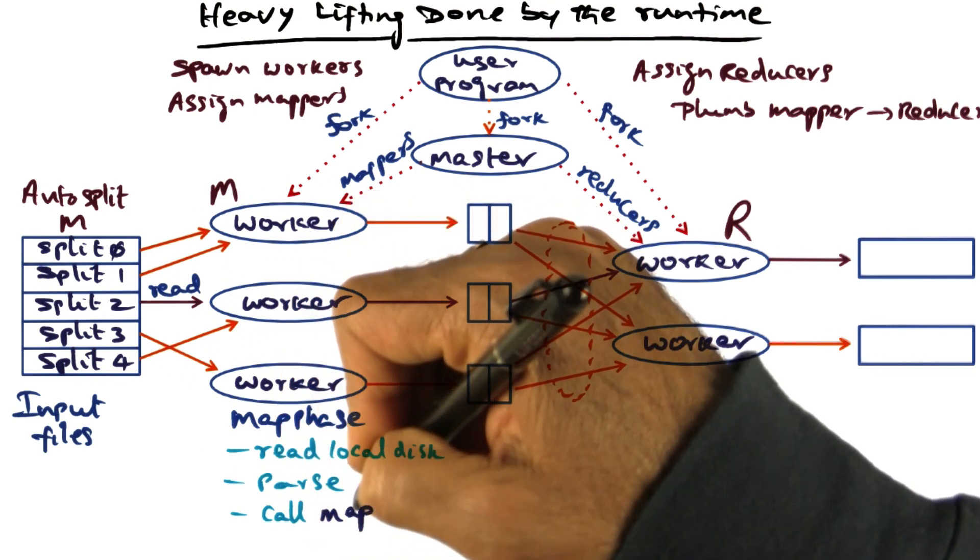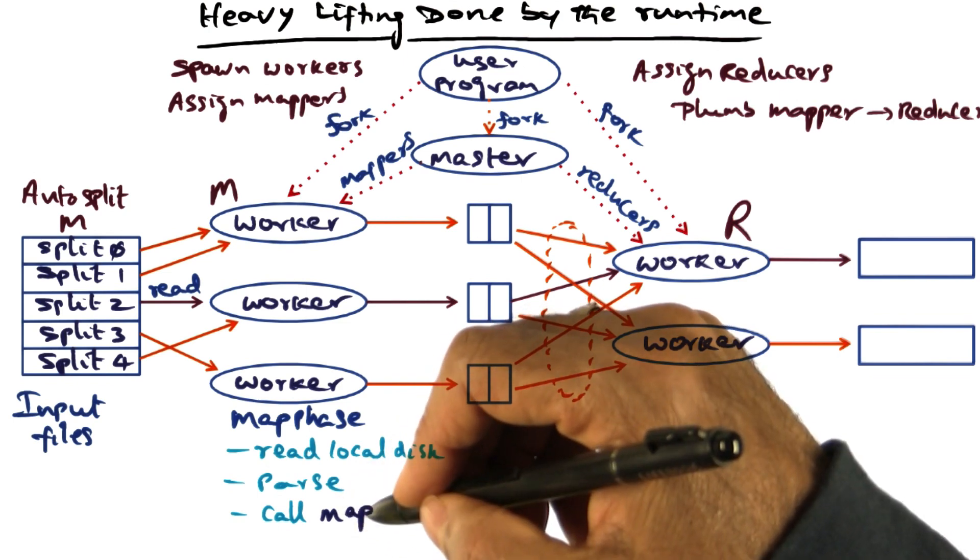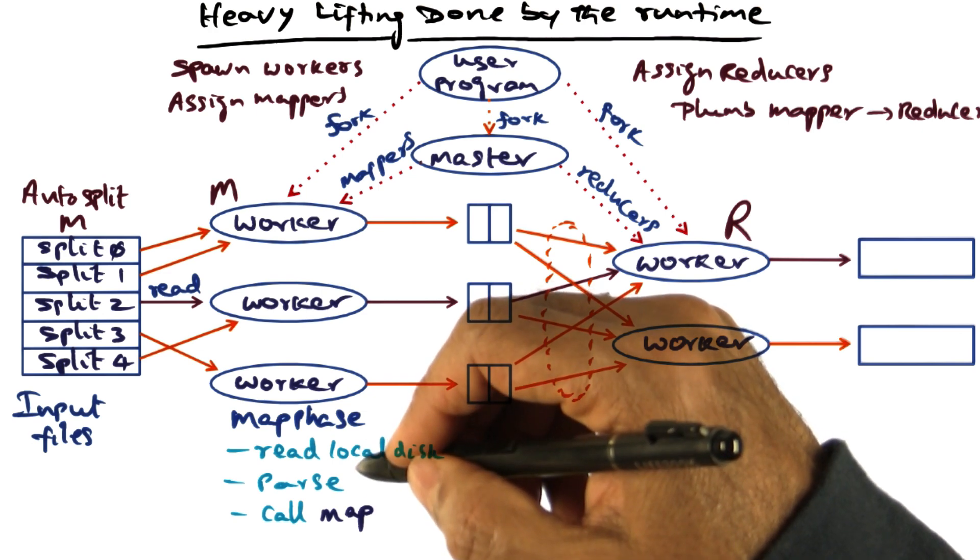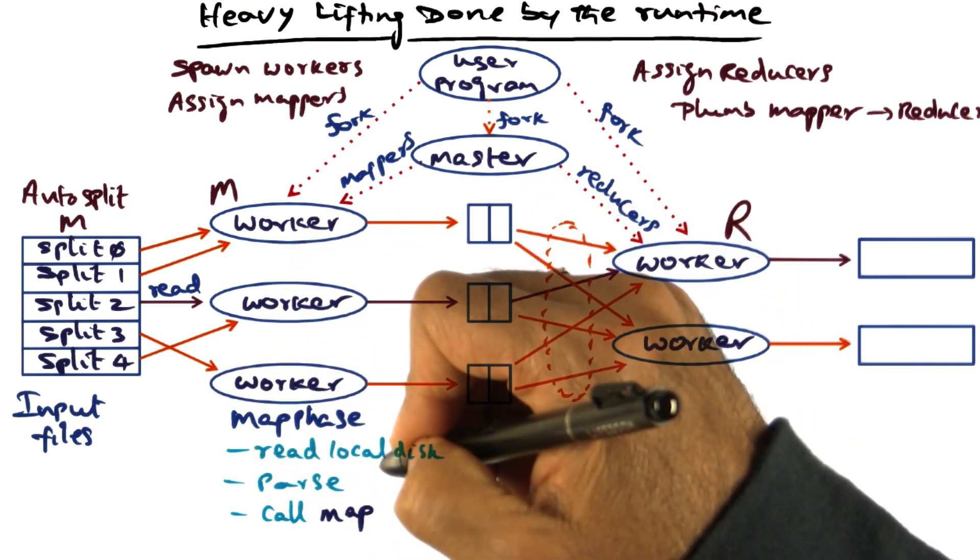They parse the input and then call the user-defined map function. The user-defined map function is the one doing the core of the work that needs to be done on the input data set to produce the intermediate output.